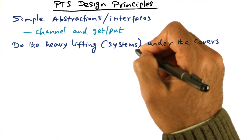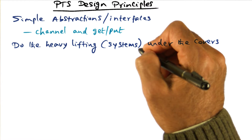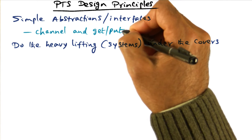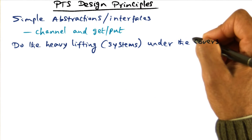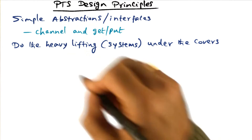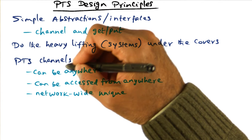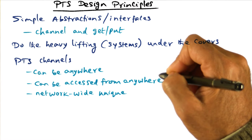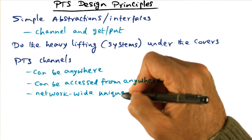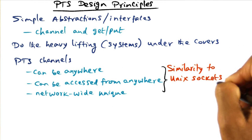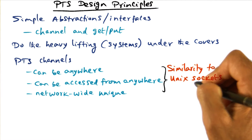All the heavy lifting — that is, the systems work that needs to happen in order to support this channel abstraction and the operations that you do on the channel abstractions, like the get and put operations — are all managed under the covers by the runtime system of PTS. So PTS channels can be anywhere, just like Unix sockets, can be accessed from anywhere, and they are network-wide unique.